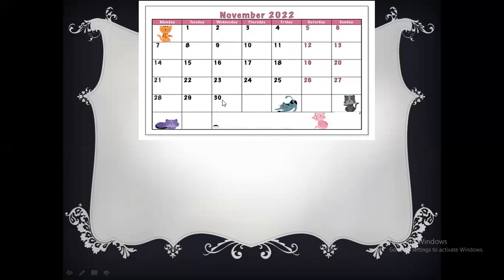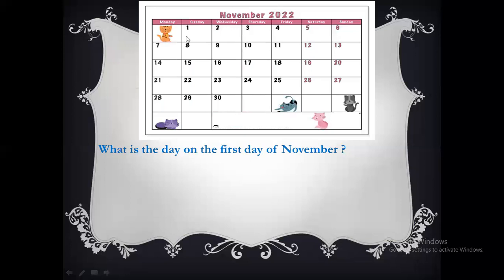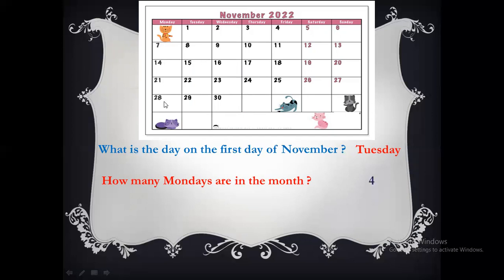Only the month of February has 28 or 29 days. Now, how to read a calendar? Look at this question: what is the day on the first day of November? The first day of November — what is the day here? Yes, it's Tuesday. How many Mondays are in the month? This is the column of Monday: one, two, three, four. There are four Mondays in the month of November 2022.